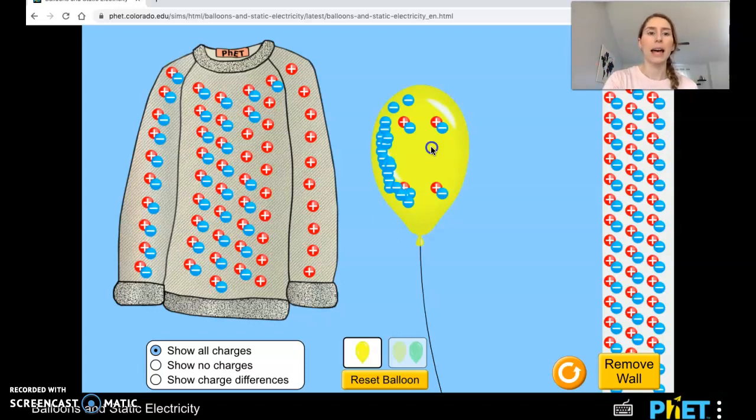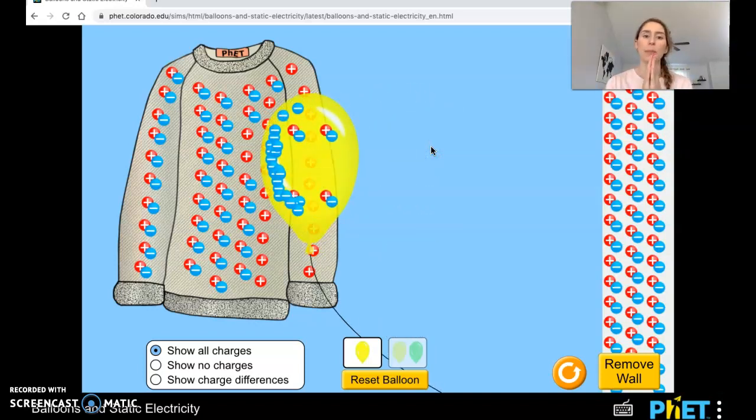And what's left on the sweater is a positive charge. It's not that the sweater has gained positive charges, there's just no negative charges left to balance it out or there are less negative charges. So overall the sweater's positive. Now when I let the balloon go you can see those two oppositely charged objects attract.